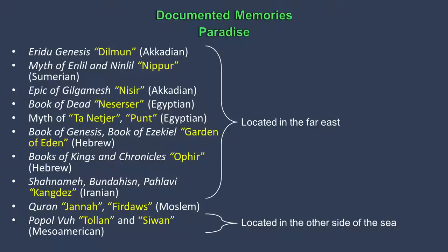The other documented memories are about Paradise, with different names for each civilization. These include: Eridu Genesis Tilmun, Myth of Enlil and Ninlil in Nippur, Epic of Gilgamesh's Nisr in Akkadian, Book of the Dead and Egyptian texts, Book of Genesis and Book of Ezekiel's Garden of Eden in Hebrew, Shahnameh and Bundahishn's Kangdez in Iranian, Quran's Janna and Firdaus in Islam, and Popol Vuh's Tulan and Sawan in Meso-America. All of these myths mention that they were located in the far east, and the one in Meso-America mentions it was located on the other side of the sea.